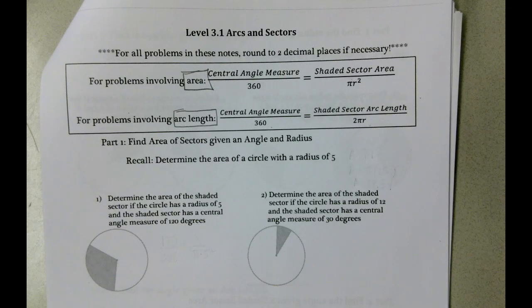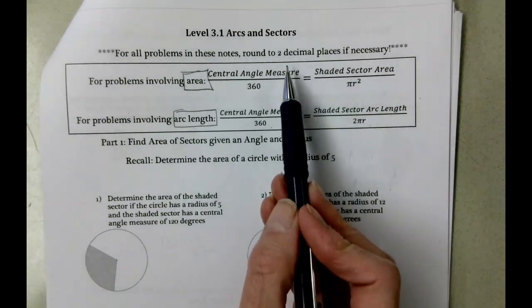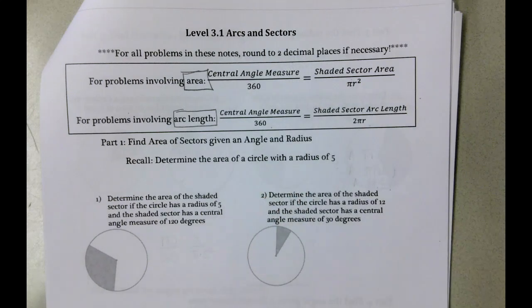Today we're going to look at level 3.1 arcs and sectors. And as we're working through these problems, we want to round to two decimal places where necessary.